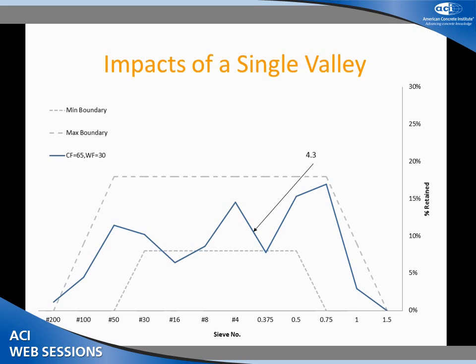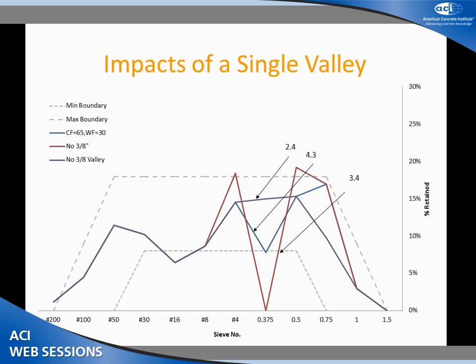A lot of times people like to talk about valleys and how valleys are so bad. They love to complain how asphalt stole all of our 3/8-inch aggregate and we can't make optimized graded concrete. Well, let's look at that 3/8. If I fill that valley in, I go from 4.3 to 2.4 — that's better. But if I drop the 3/8 out entirely — asphalt, take it all — we can still make good concrete that only needs 3.4 ounces per hundred weight of water reducer. There's no real difference. But notice — you cannot go too high in any one peak. That is very, very important.